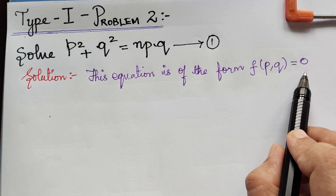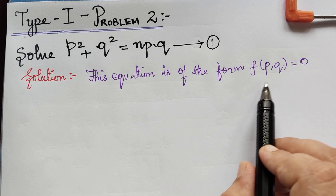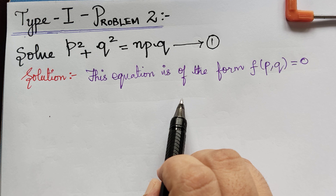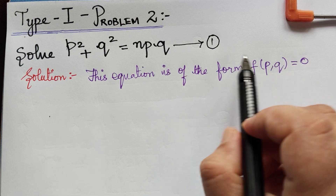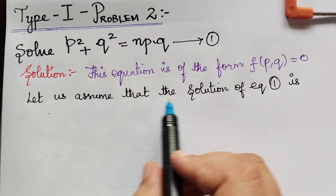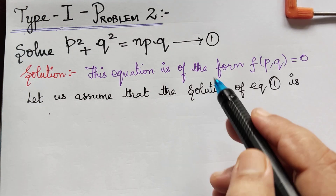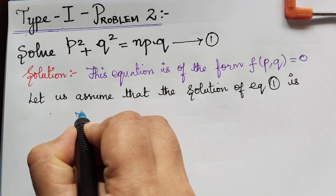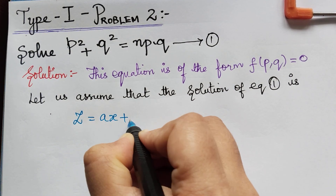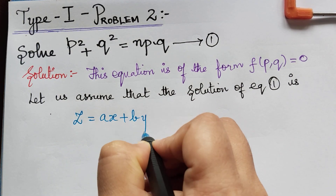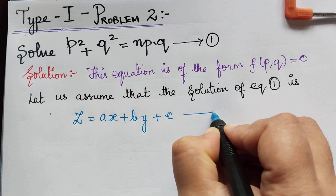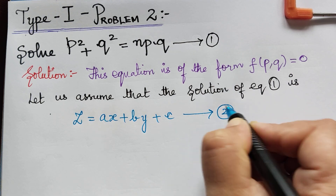The second step is we have to assume that z = ax + by + c is the solution of equation 1. So we are going to assume that the solution of equation 1 is z = ax + by + c, and let us mark this as equation 2.